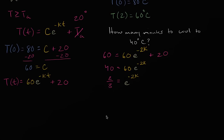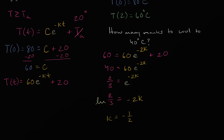Taking the natural log of both sides: ln(2/3) = negative two k. Dividing both sides by negative two: k = negative one-half times the natural log of two-thirds. So we have solved for all the constants.